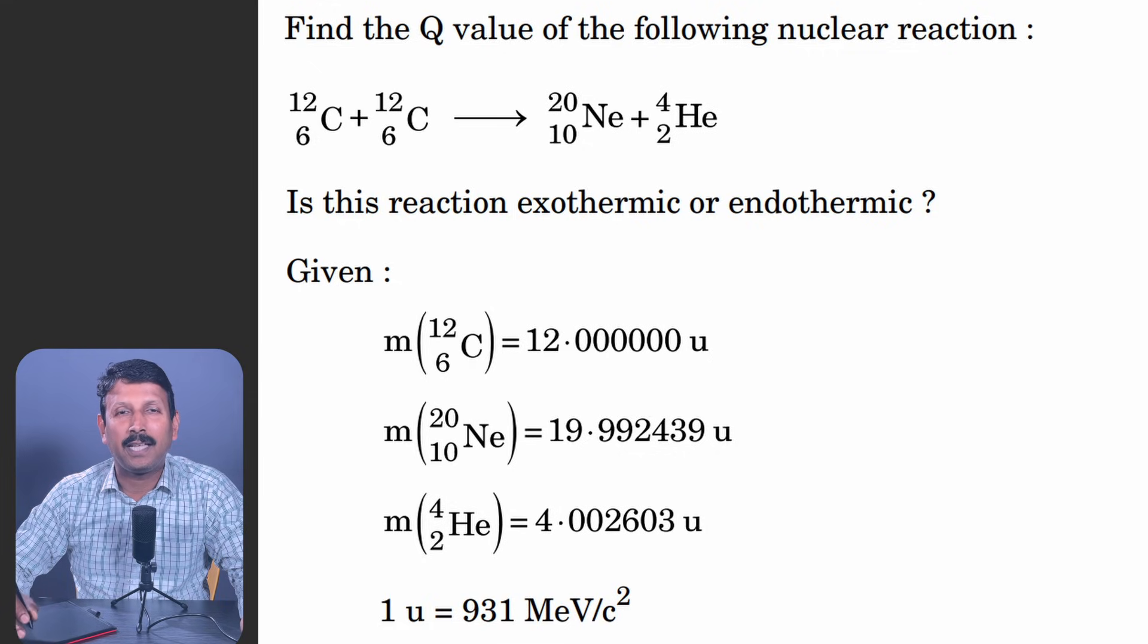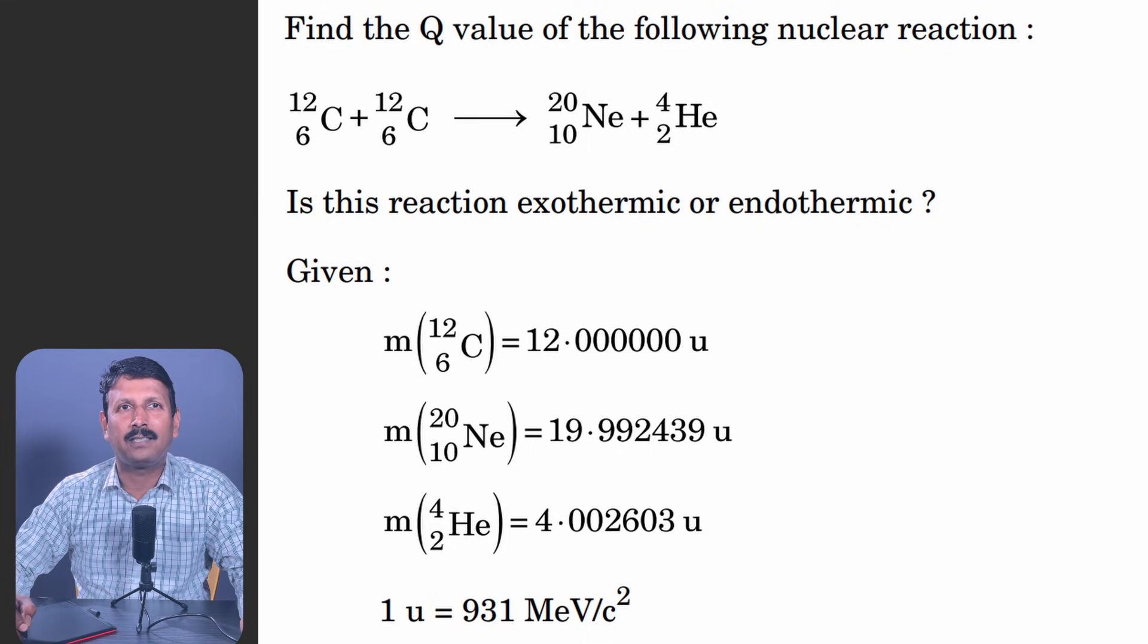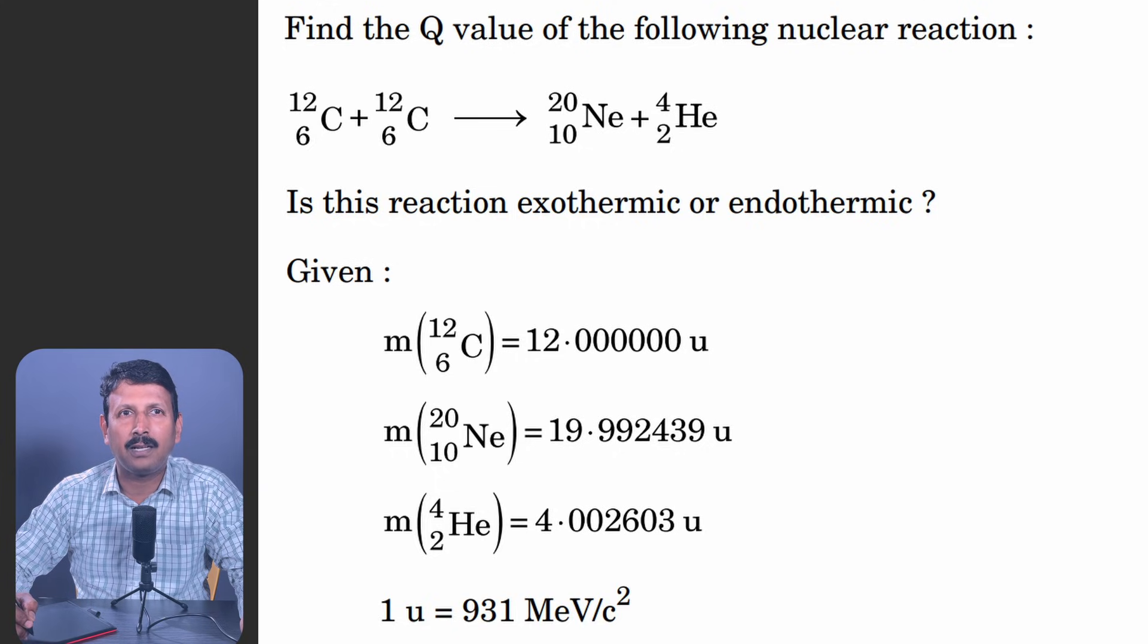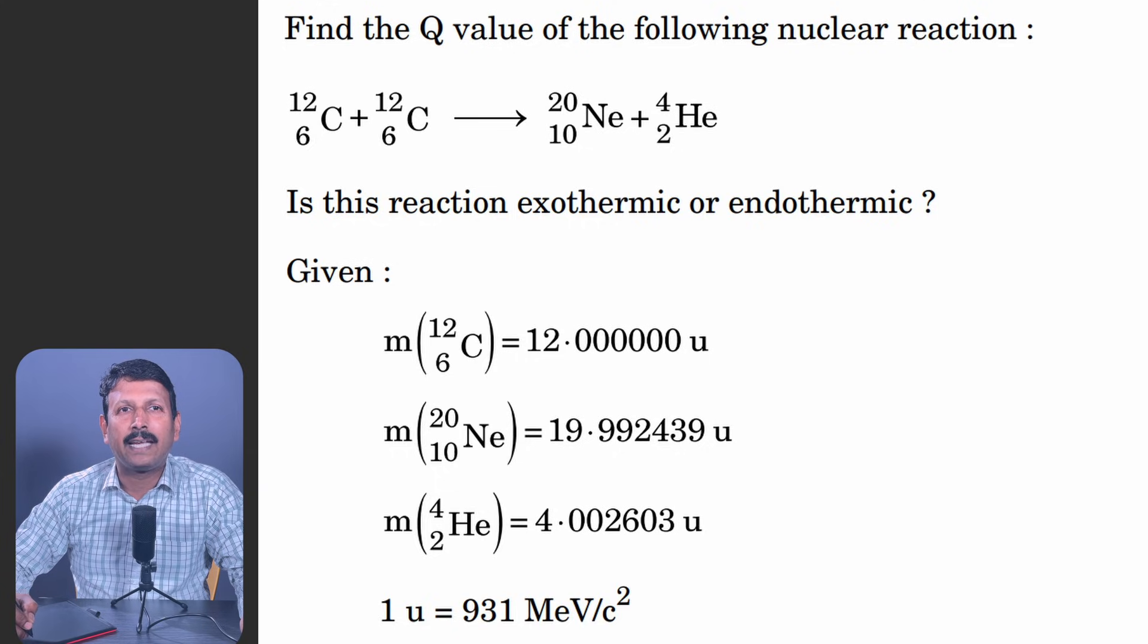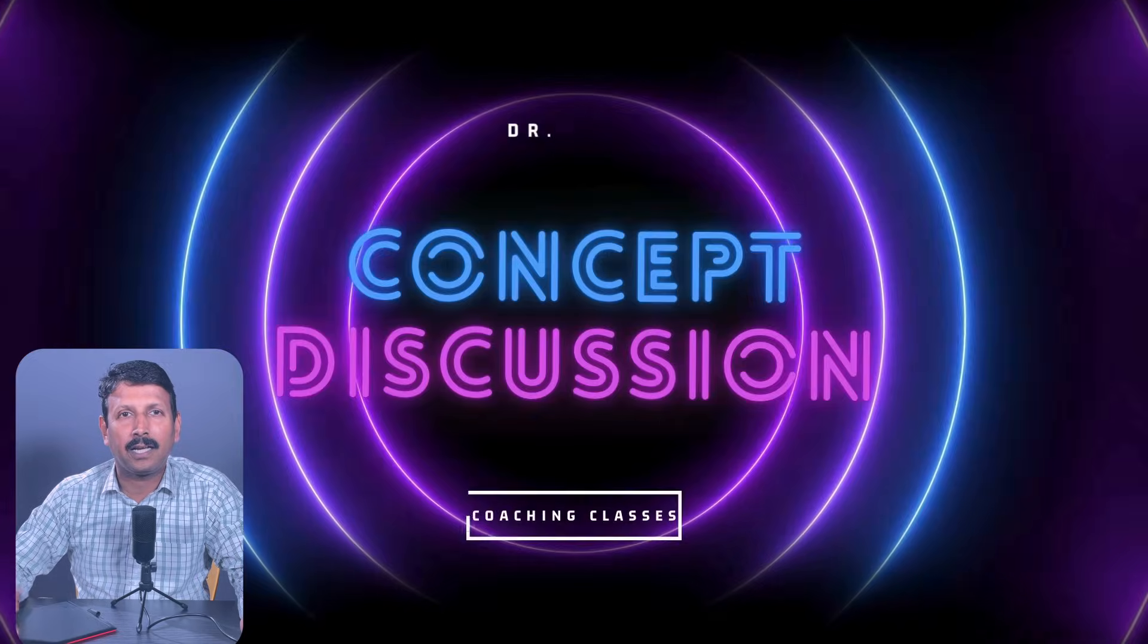The question paper code is 556, question number 26. The question is find the Q value of the following nuclear reaction. There is a reaction given here and also you want to find is this reaction exothermic or endothermic. The data is given.